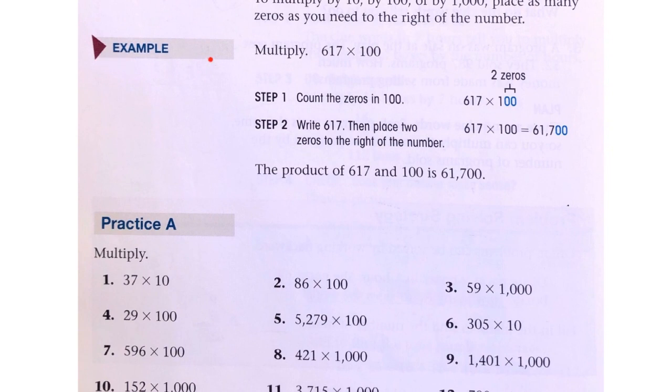So for example, multiply 617 times 100. Well, step one, count the zeros in 100. There's two of them.